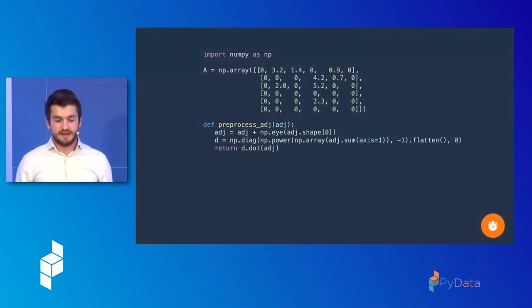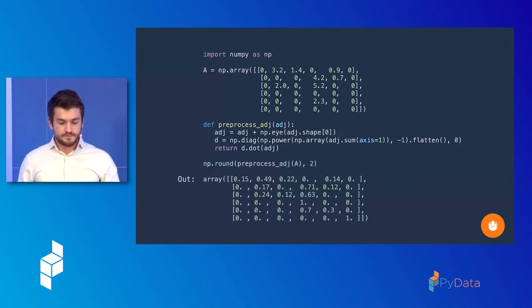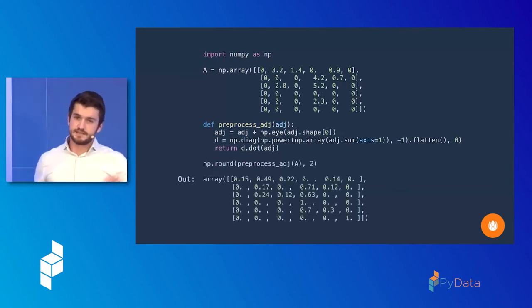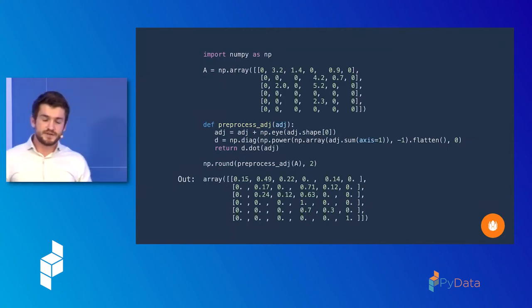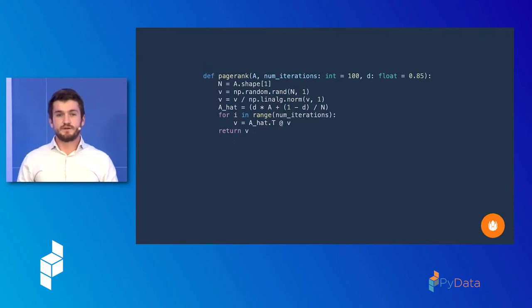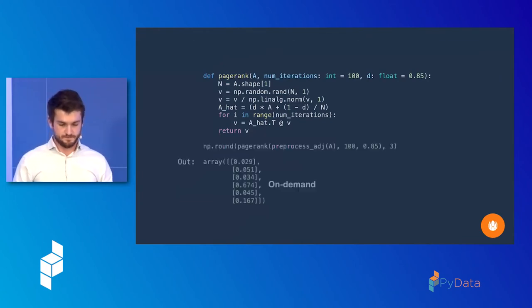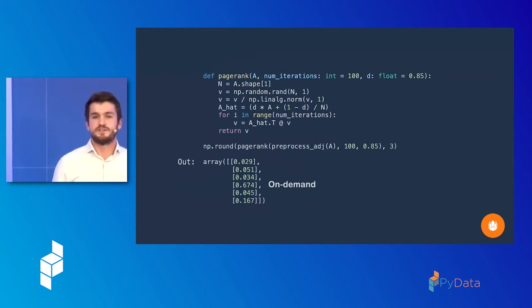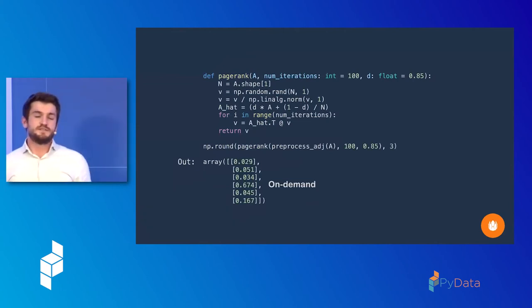All right, so what does this look like in code? I have my adjacency matrix here. In the preprocessing, I added this diagonal, this I matrix, and I normalize by the horizontal axis. This is the result. And a very simple implementation of the PageRank algorithm. As I said, initialize the probability vector and multiply it by this adjacency matrix a number of times. And as you see here in the results, indeed, the on-demand service is the one that has the highest probability score after these iterations.